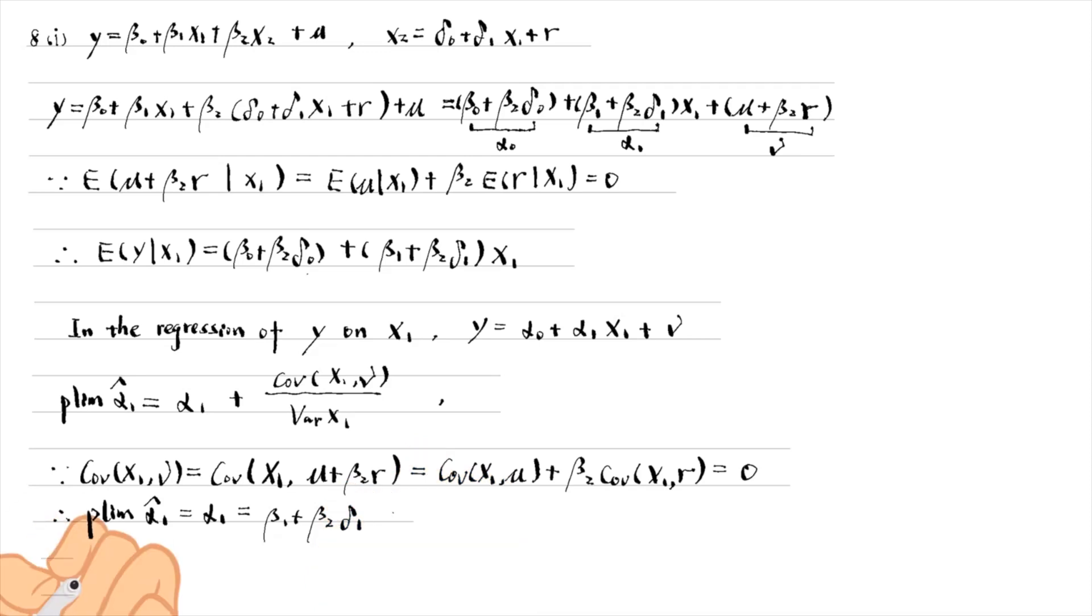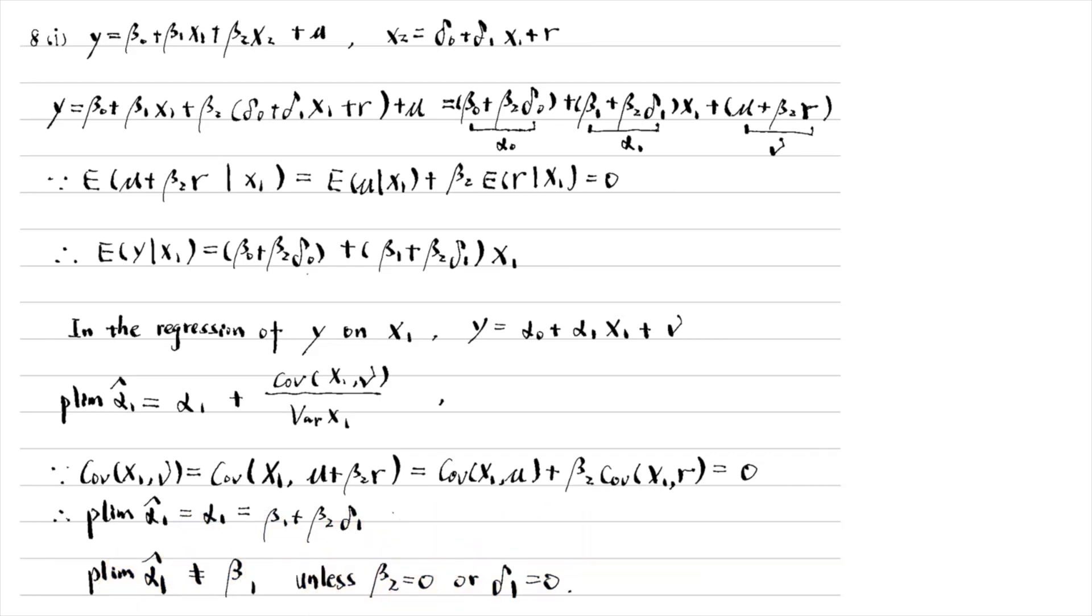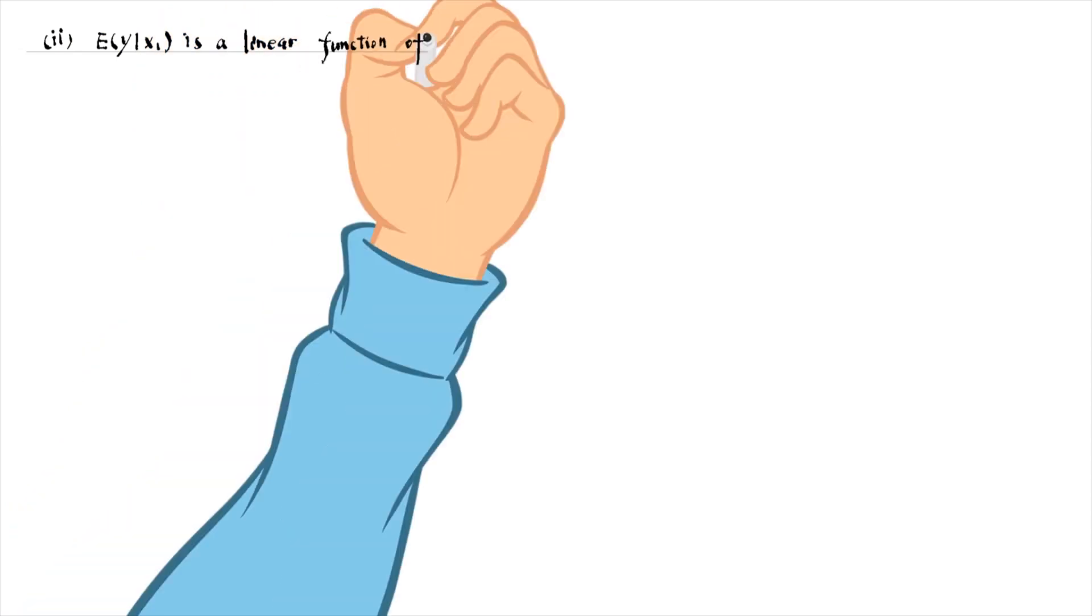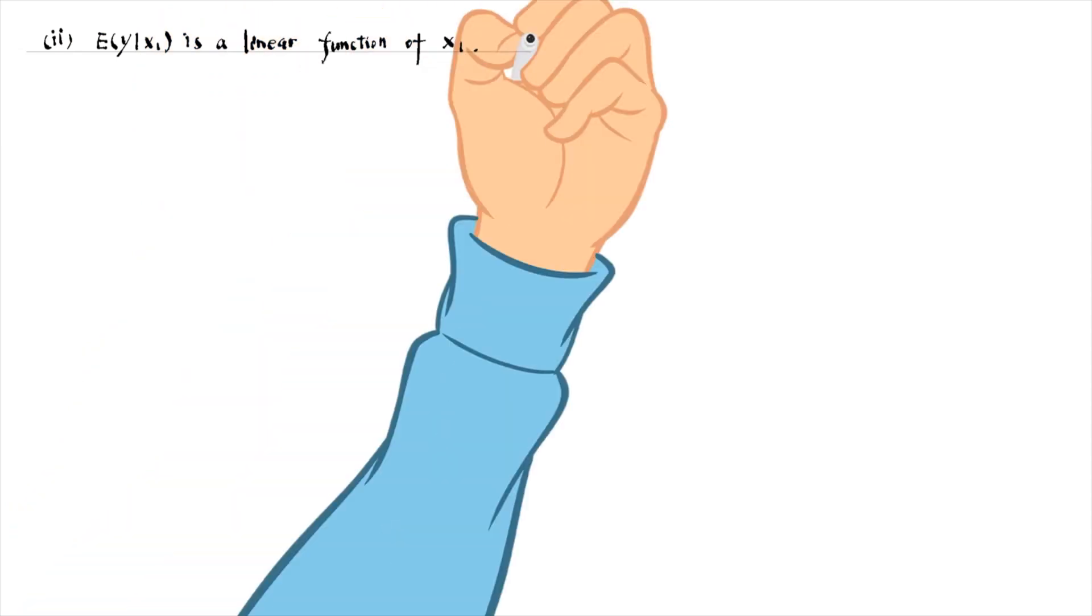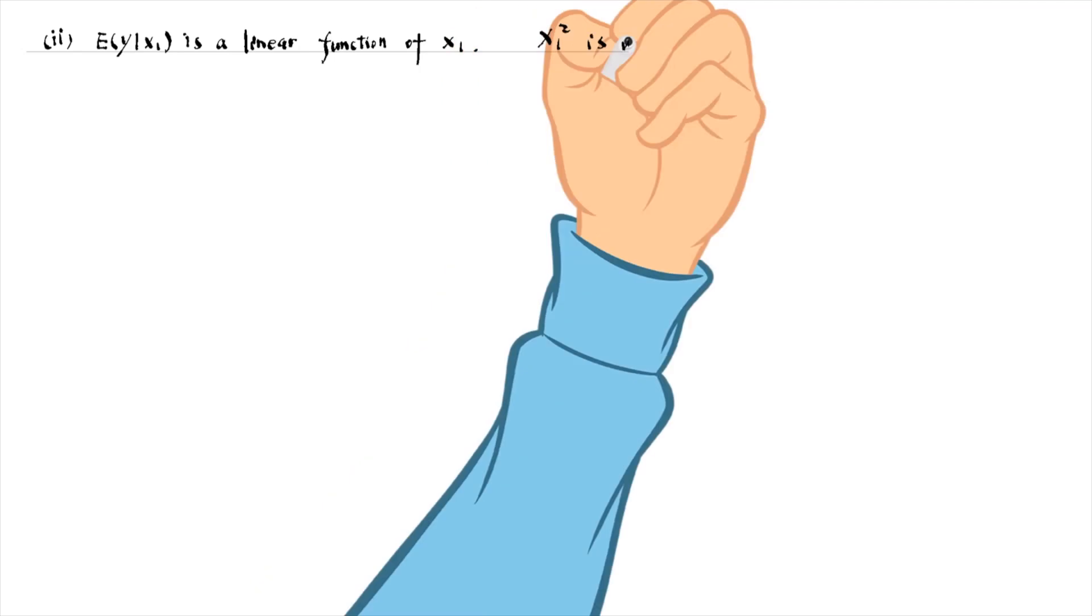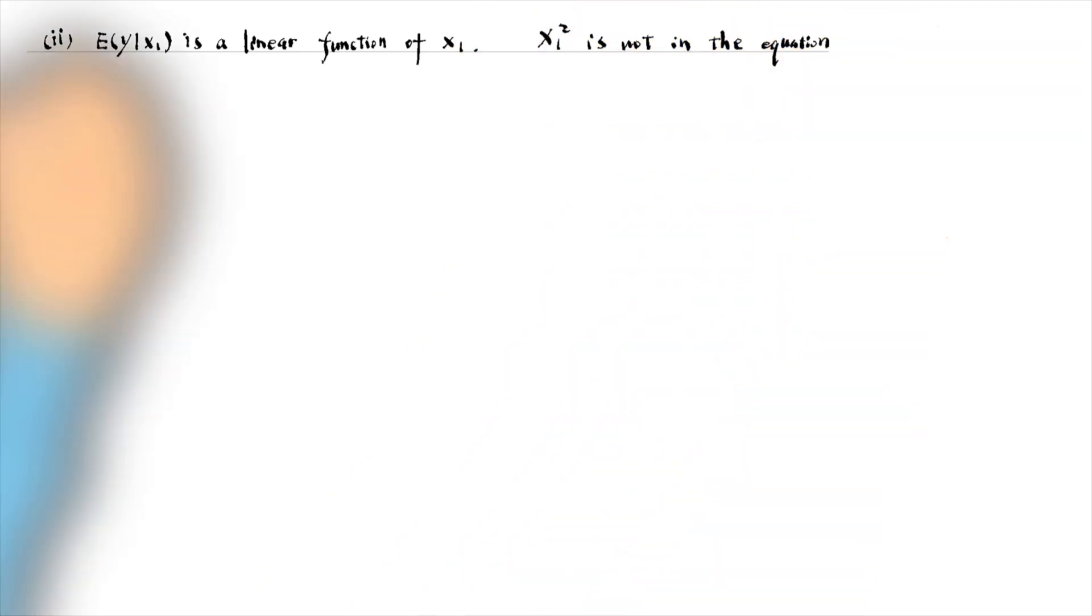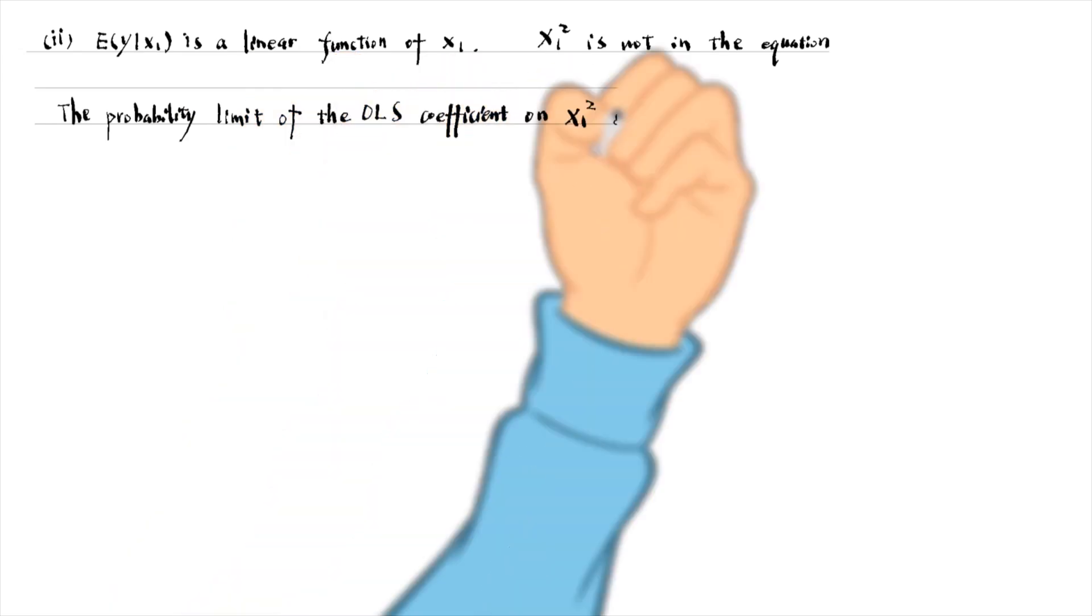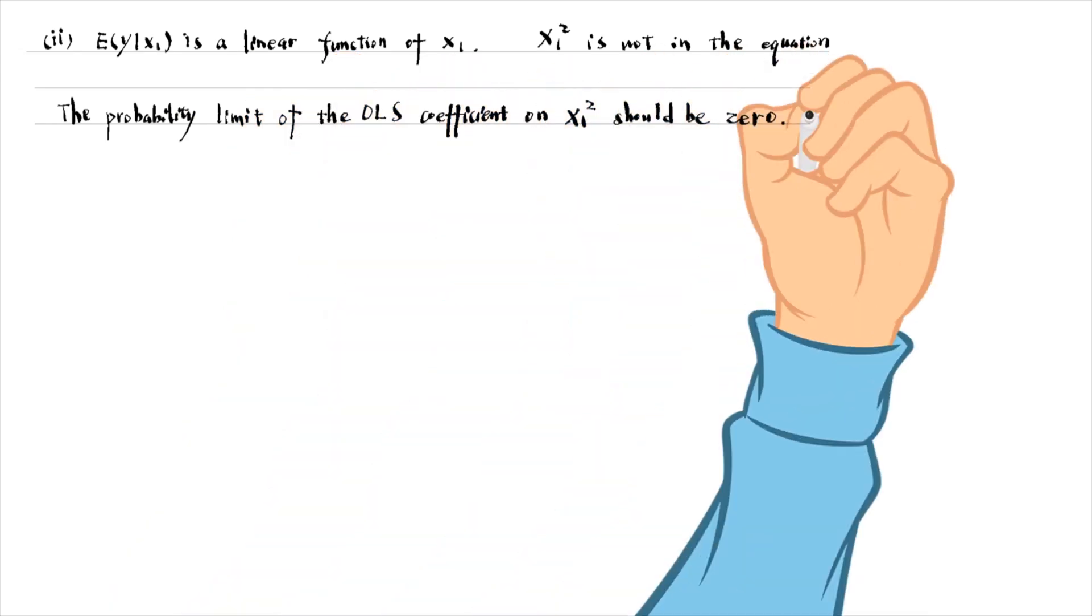It is not equal to beta1 unless beta2 is 0 or delta1 is 0. For part 2, the expected value of y conditional on x1 is a linear function of x1. The square term of x1 is not in the equation. Thus, the probability limit of the OLS estimate for the coefficient on x1 squared should be 0.